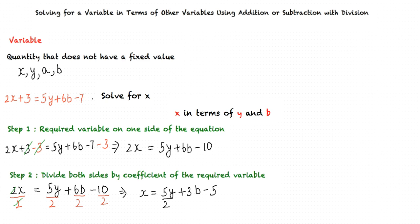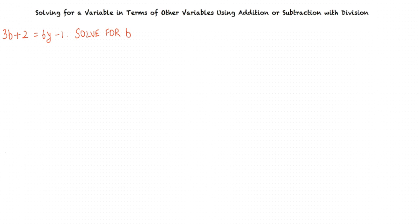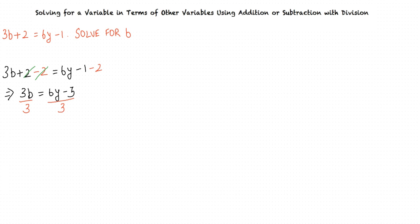Can we do another example? Sure. Let us consider the following equation: 3b plus 2 equals 6y minus 1, and say we are required to solve for b. First, we subtract 2 on both sides of the equation so that we obtain the required variable b on one side. Subtracting 2 from both sides, we get 3b equals 6y minus 3. Finally, we divide by 3 on both sides of the equation to solve for the variable. This implies b equals 2y minus 1.